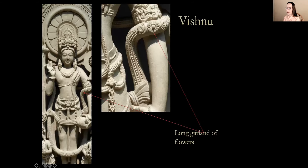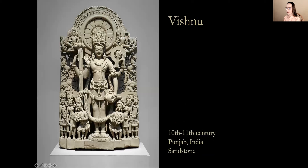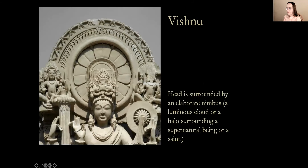The long garland of flowers wrapping around Vishnu is evident here. The head is surrounded by an elaborate halo or nimbus, similar to the Buddhist figure we saw in the Gupta period — a very typical halo seen across the Indic faiths indicating a supernatural being or a saint.